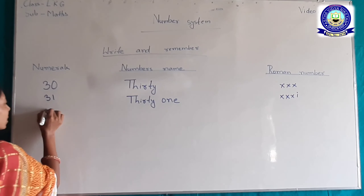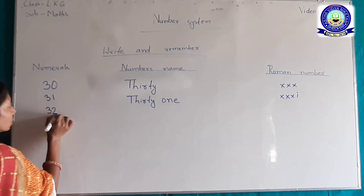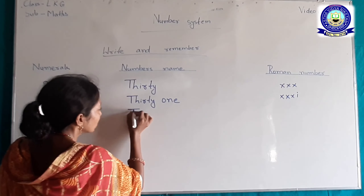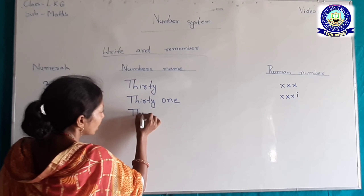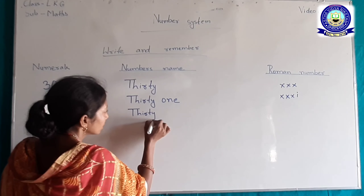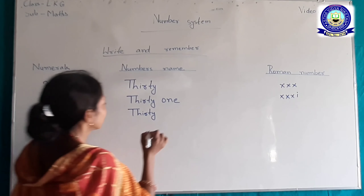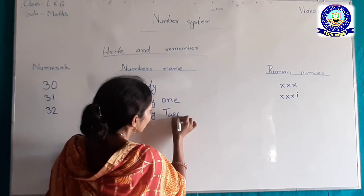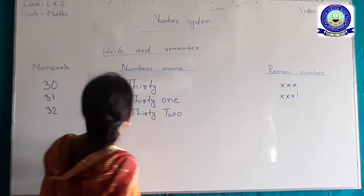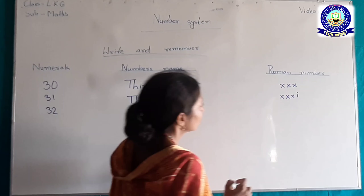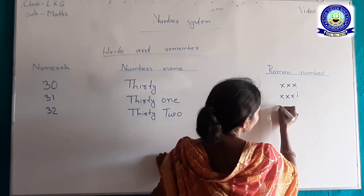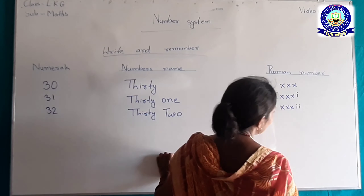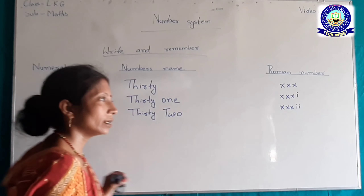31, 32। 32 का number word में लिखेंगे: T-H-I-R-T-Y T-W-O। 32 का Roman number: Triple X, Double I — मतलब XXXII, जो कि 30 plus 2 है।